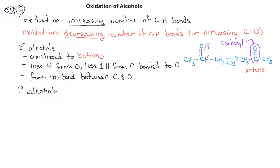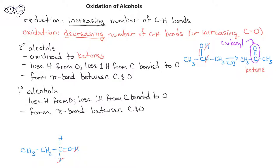Primary alcohols can also undergo oxidation. In this case, we still lose the hydrogen from the oxygen as well as one hydrogen from the carbon bonded to the oxygen. We also get the pi bond formed between the carbon and oxygen.